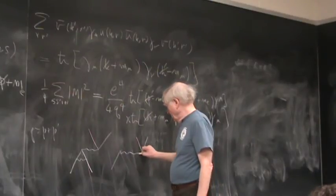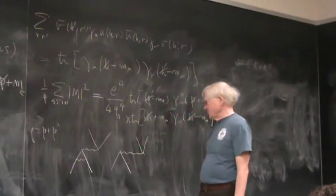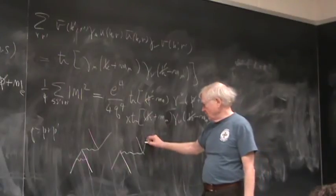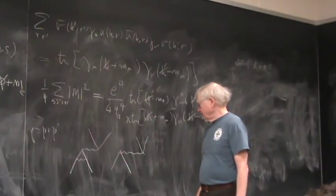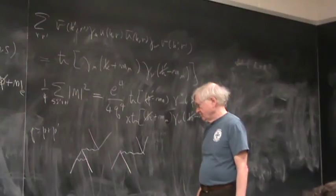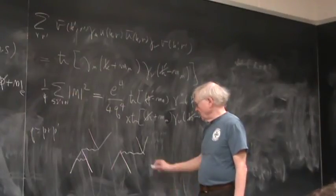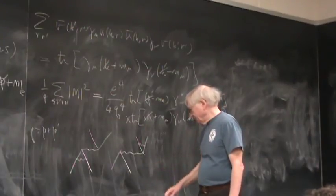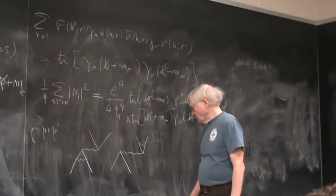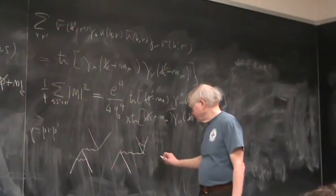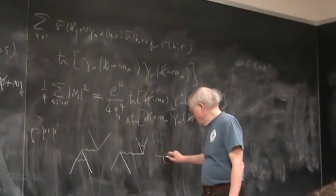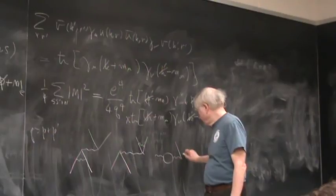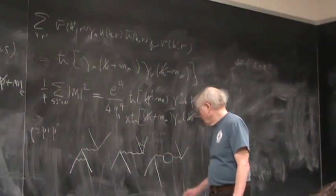And then we have a product of two traces. Trace of (p'̸ - m_e) γ^μ (p̸ + m_e) γ^ν times trace of (k̸ + m_μ) γ_μ (k'̸ - m_μ) γ_ν. Now we're going to make a slight simplification by ignoring m_e. m_e is less than m_μ by a factor of 200. And it turns out that, as Peskin-Schroeder pointed out, the helicity terms... all sorts of other diagrams that could occur.